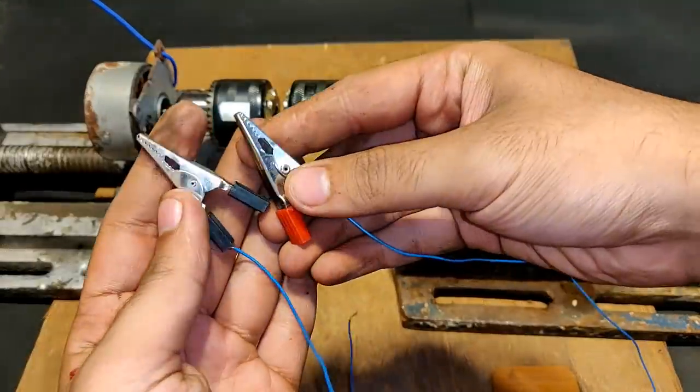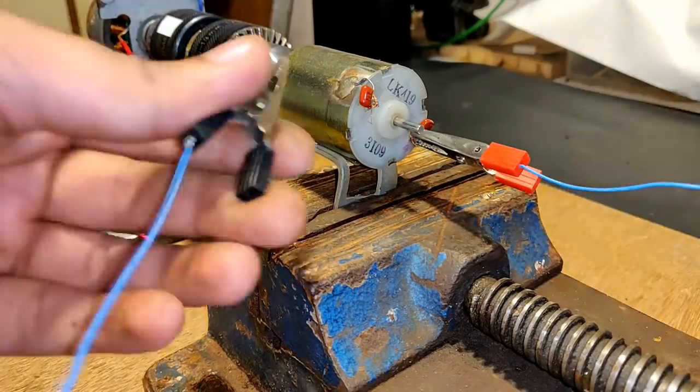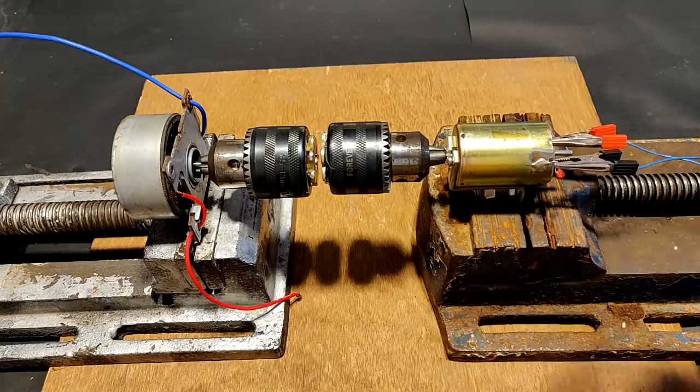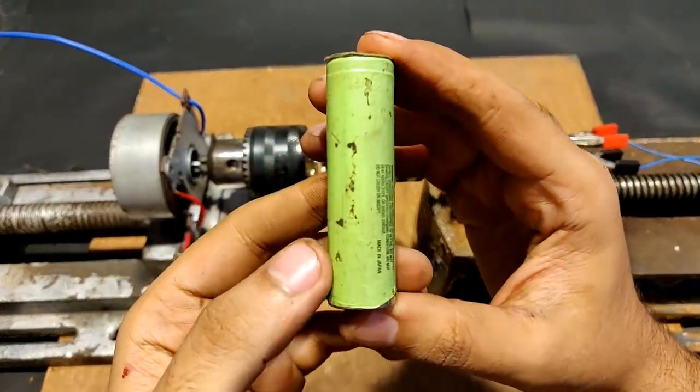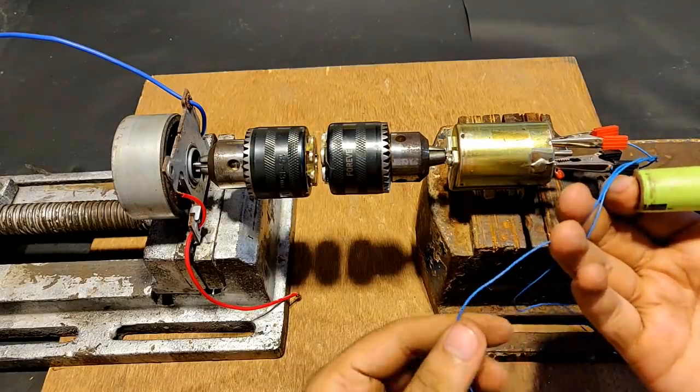Here are two jumper cables that I'm going to connect at the back of this motor. This is a 3.7 volts lithium-ion battery cell that I'm going to use to drive this motor.